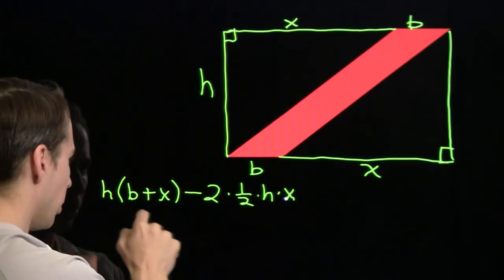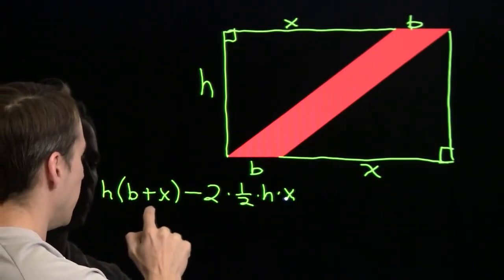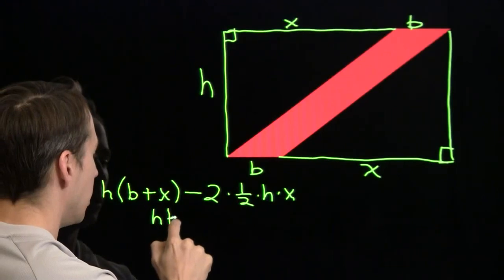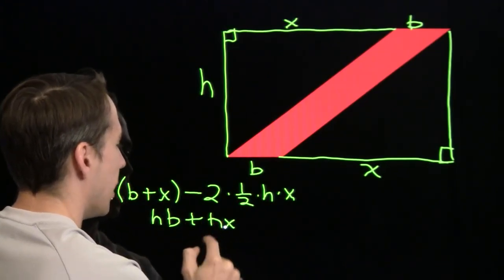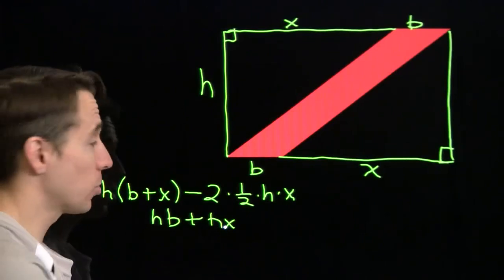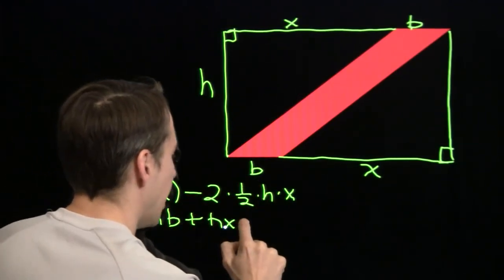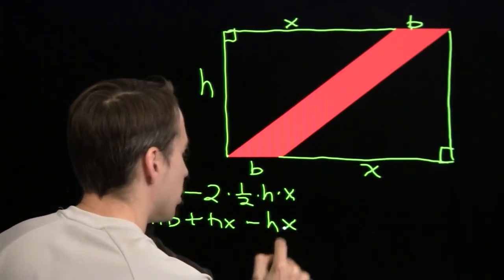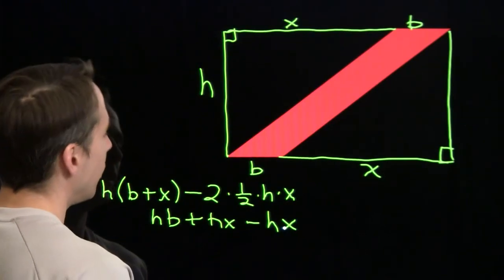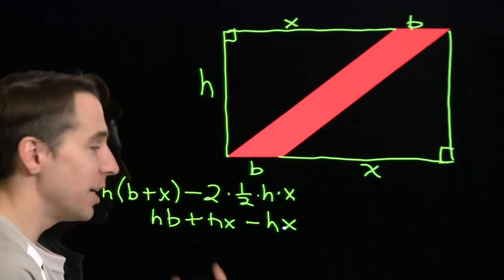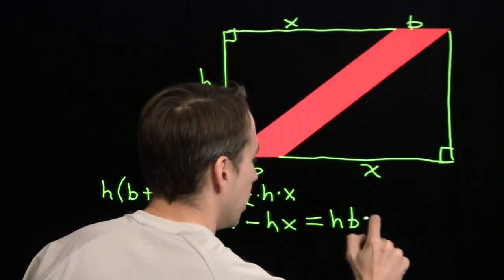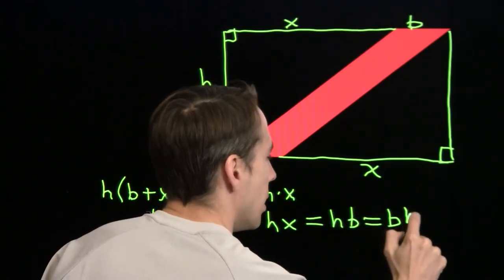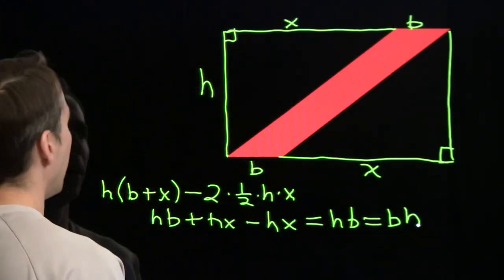So to figure this out, well, we'll go ahead and expand this product. h times b is hb. h times x is hx. Two times a half, that's just one, times h times x minus h times x. Sure enough, hx minus hx, that's just zero. And we're left with h times b, which is, of course, the same thing as the base times the height.